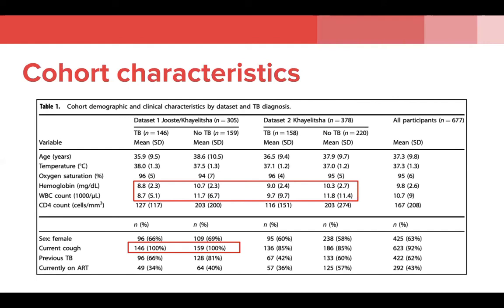This table summarizes the demographic characteristics of our cohort. The datasets were relatively similar in terms of age, mean oxygen saturation, and other clinical variables. On average, patients with TB appear to be slightly more leukopenic — 8.7 and 9.7 versus 11.7 and 11.8 — as well as anemic, with hemoglobins of 8.8 and 9 versus 10.7 and 10.3. Notably, 100% of patients in dataset one had a cough, as this was an inclusion criterion, while dataset two included other TB symptoms such as fever, night sweats, and weight loss.